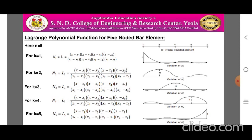The variation of these shape functions is shown along the length of the bar element in the figure. Each shape function has the value of 1 at its corresponding node and 0 at all remaining nodes. For example, at node 1, n_1 = 1, while at nodes 2, 3, 4, and 5, the value of n_1 is 0. Similarly, the variations for nodes 2, 3, 4, and 5 are shown in the figure.